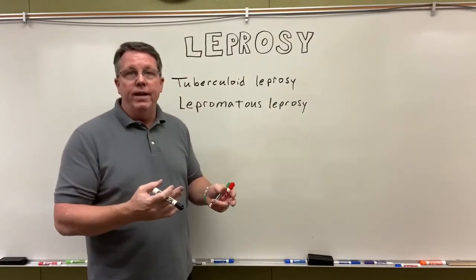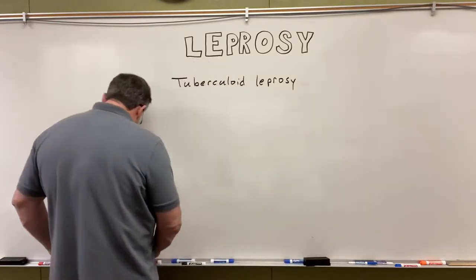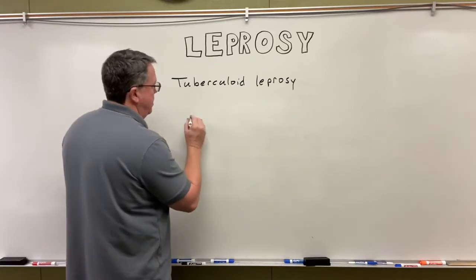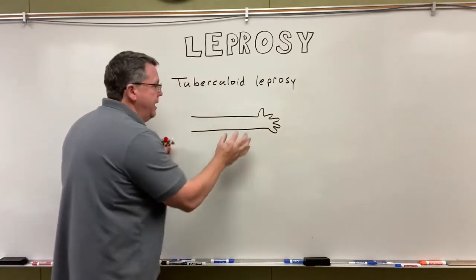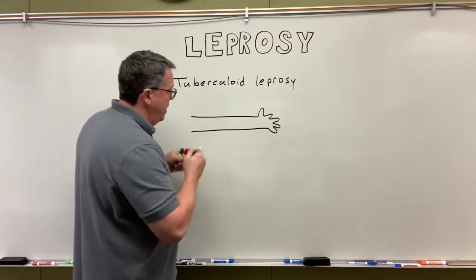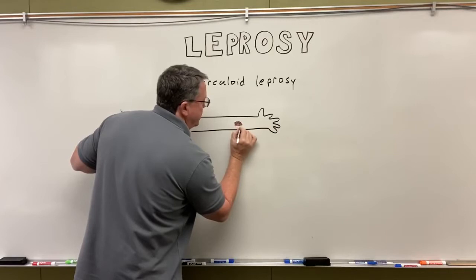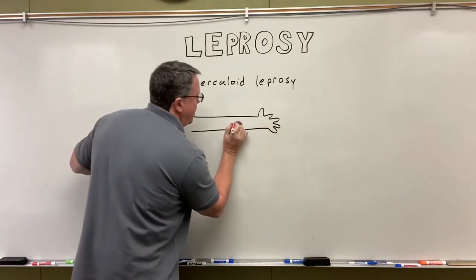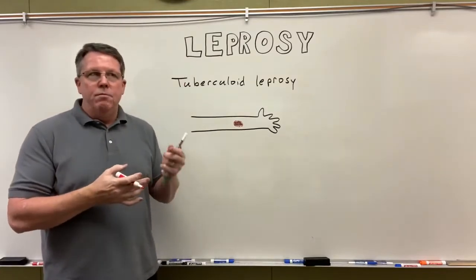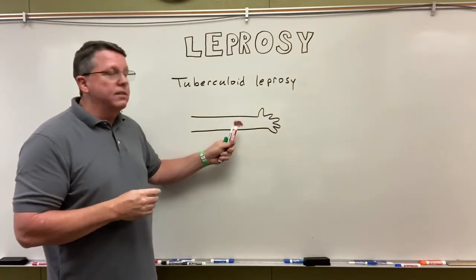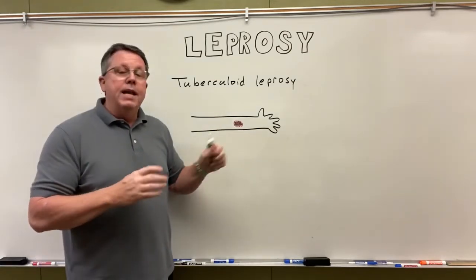In tuberculoid leprosy, the cell-mediated response can contain the infection to one area. What typically happens is a loss of sensation on a patch of skin — say on the hand where bacteria entered through a cut. There may also be some discoloration, and that area is usually surrounded by nodules. The nodules are due to bacteria multiplying inside macrophages in the skin.